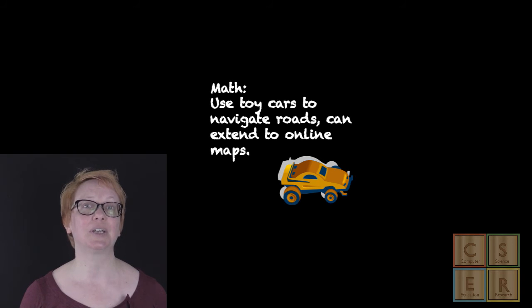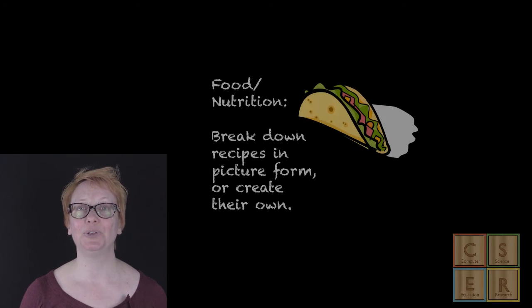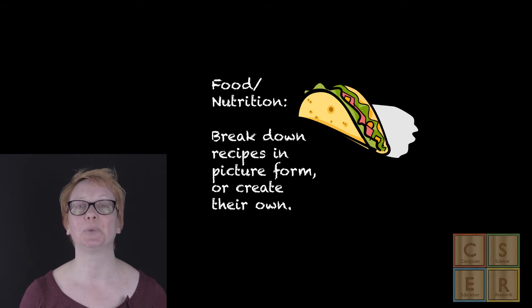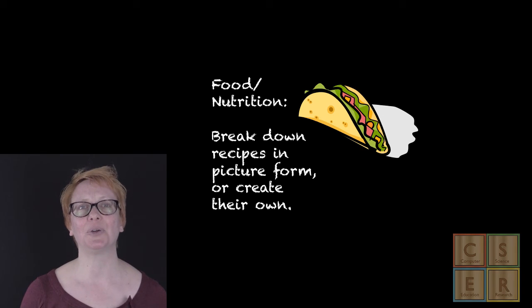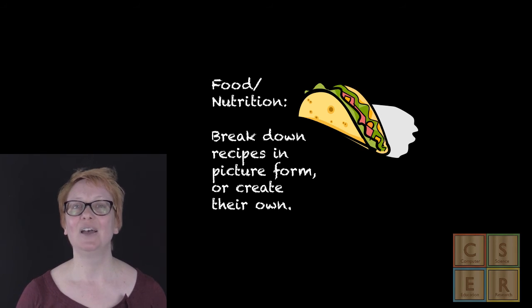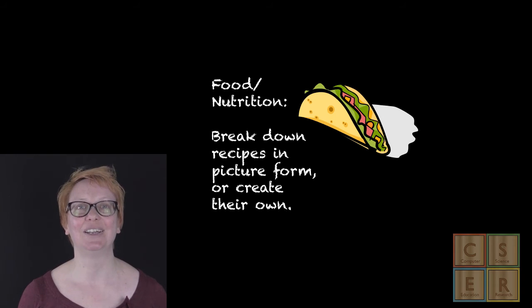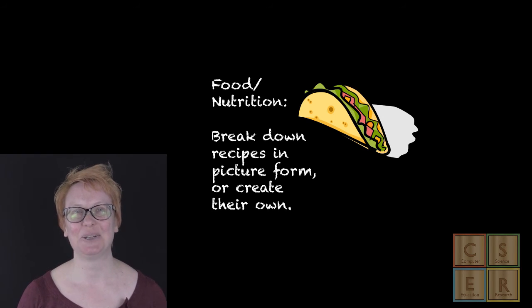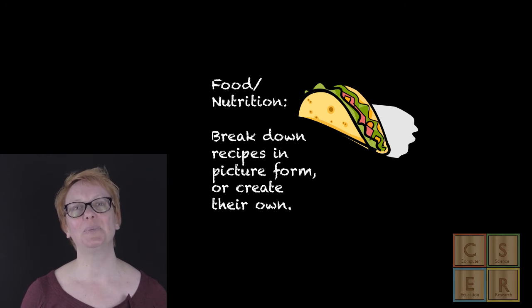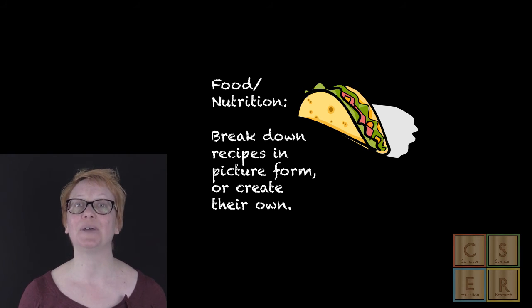This could then be extended to discussions about GPS and perhaps also online maps. In a theme on food and nutrition, students could be asked to explore recipes by cutting out the individual steps on paper and then working out the correct order, or considering what would happen if the steps were done in the wrong order — imagine breaking an egg after trying to mix it into the flour. They might also combine different recipe steps to create a new recipe for their favourite food.